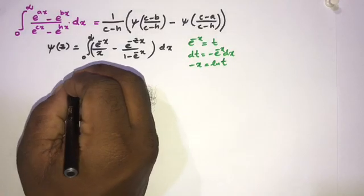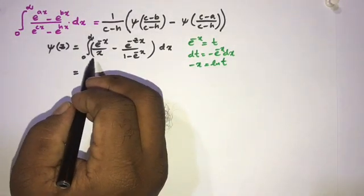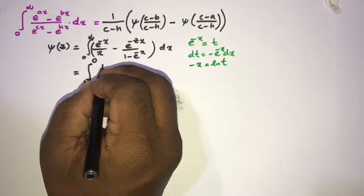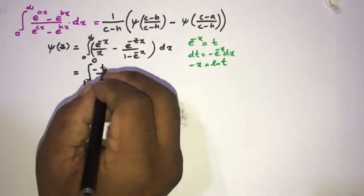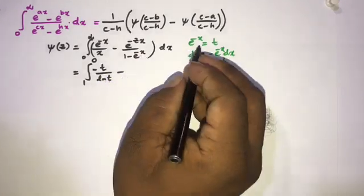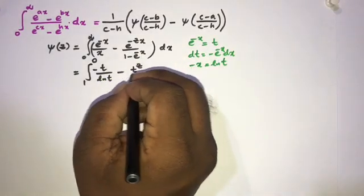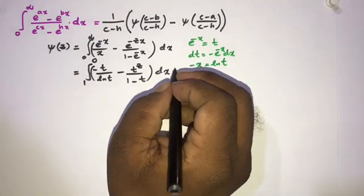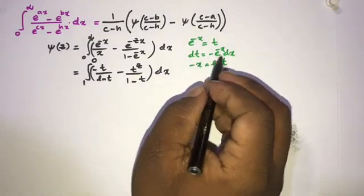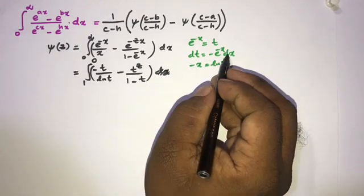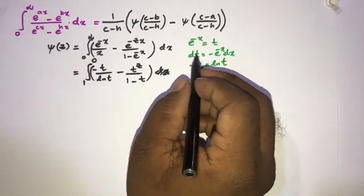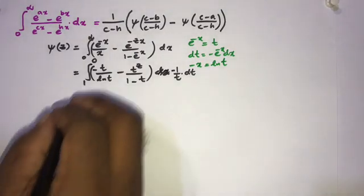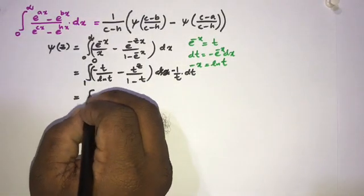Now we can plug in. When x approaches 0, t approaches 1, and as x approaches infinity, t approaches 0. We have x = -ln(t), e^(-cx) = t^c, and 1 - e^(-x) = 1 - t. Also dx = -1/t dt, so with the minus sign we get dt/t.